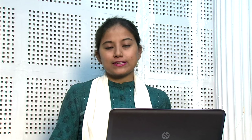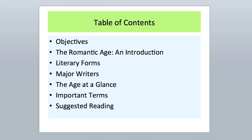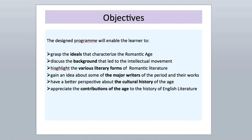The program is designed as follows: Table of Contents, followed by the Objectives, the Romantic Age and Introduction, the Literary Forms, Major Writers, the Age at a Glance, followed by some important terms and Suggested Reading. The objectives are designed as follows. The programming enables the learner to understand the ideals that characterize the Romantic Age, discuss the background that led to the intellectual movement, highlight the various literary forms of Romantic literature, gain an idea about some of the major writers of the period and their works, have a better perspective about the cultural history of the age, and appreciate the contributions of the age to the history of English literature.